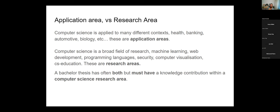A bachelor thesis often has both application areas and research areas. If you're doing something in the automotive industry — with Saab, Volvo, or Mercedes — your application area is automotive, and that shapes which computer science areas you apply. A bachelor thesis needs to describe the problem area, which may be applied, but must contain a computer science knowledge contribution. Some other computer scientist should find your research interesting and learn something new from it.